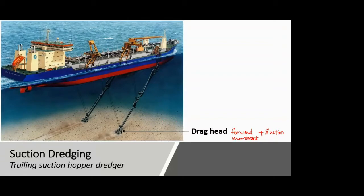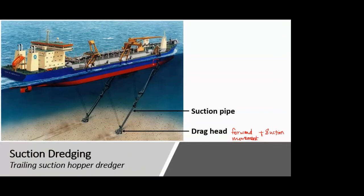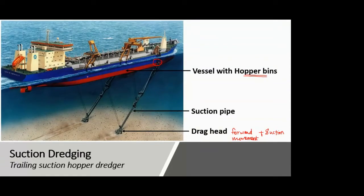The next important component is the suction pipe. Whatever material is being excavated or sucked from the bed of the water body needs to be transferred to the surface, and for that you need the suction pipe. Like previous dredging techniques, the suction pipe is capable of sucking material because it has a motor fitted somewhere inside the dredger itself. Then the actual vessel has hopper bins — we will see in detail what a hopper bin is — and inside that vessel you have these hopper bins.